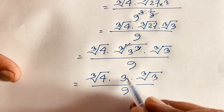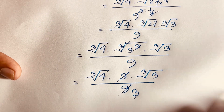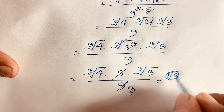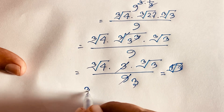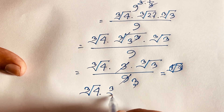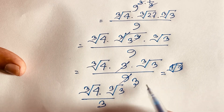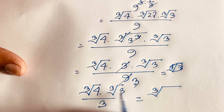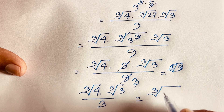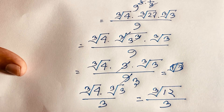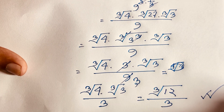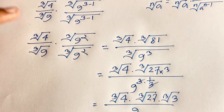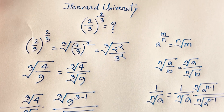The 3 in the numerator and 9 in the denominator simplify, leaving 3 in the denominator. So we get cube root of (4 times 3) over 3, which equals cube root of 12 over 3. This is our final answer. Thank you — if you enjoyed this video, please subscribe for more interesting videos. Goodbye, take care!